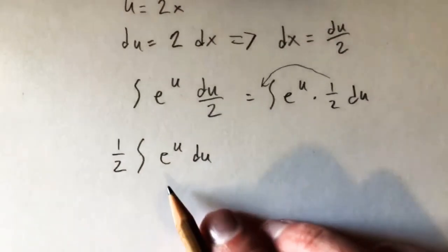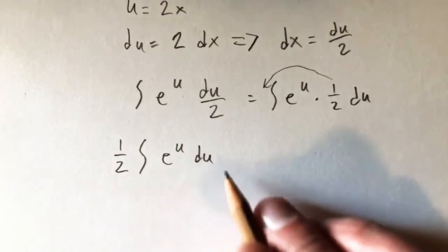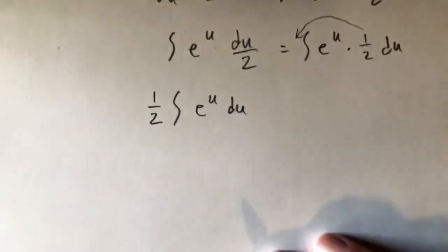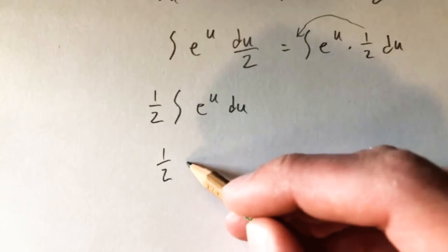So now we have an integral that we probably are more familiar with. We know the antiderivative of e to the u with respect to u is just e to the u. So now this integral is actually pretty easy to do. We just have 1 half times e to the u.